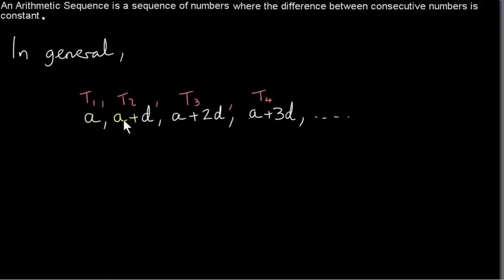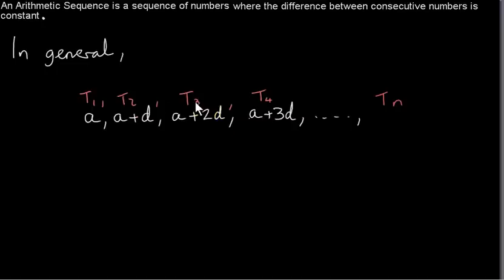So this is T1. T2 is a plus 1d. T3 is a plus 2d. T4 is a plus 3d. So TN is going to be a plus something times d. That something — the coefficient of d — is 1 less than the subscript of T.